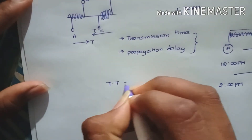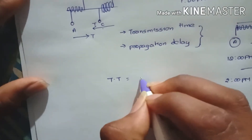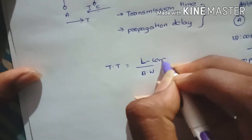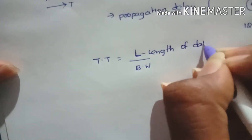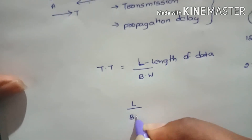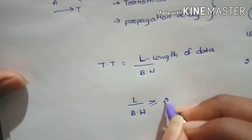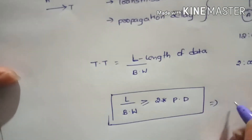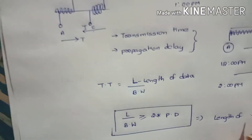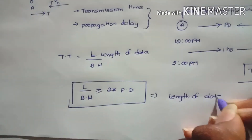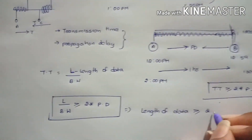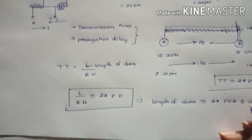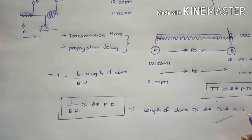Transmission time equals length of data (L) divided by bandwidth (BW). So the condition is: L / BW ≥ 2 × propagation delay. This implies: L ≥ 2 × propagation delay × bandwidth. This is the CSMA/CD condition for minimum frame size.